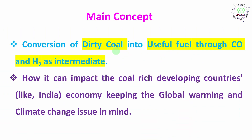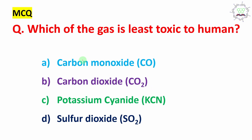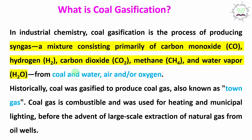First, we discuss dirty coal converted to useful fuel — a carbon monoxide and hydrogen mixture called syngas. Second, how it can impact coal-rich developing countries' economies, keeping global warming and climate change in mind. Lots of chemistry will be discussed. Before going into details, one MCQ for you: which of the gases is least toxic to human? Four options are provided. I request everyone to attempt this in the comment box. At the end of the discussion you'll have the right answer. Now let's go to the main topic.